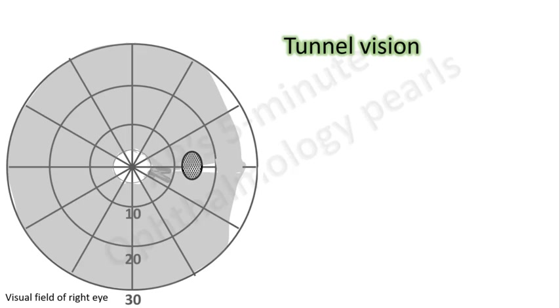Further progression results in loss of most of the fields except for a central and temporal island of vision due to relative preservation of the papillomacular bundle and some nasal fibers. This central island of vision is referred to as tunnel vision.